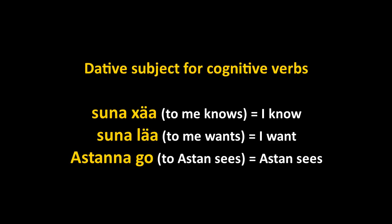There's only a present and a past tense — no personal conjugation. Suna lea means 'I want,' literally 'to me wants.' Astan ago means 'Astan sees' — literally 'to Astan, it sees.'